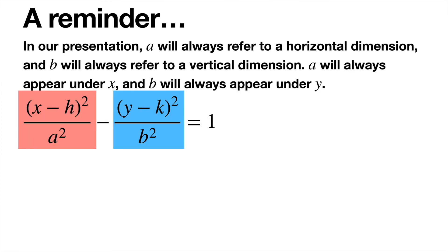Just as a reminder, before we get any further in our presentation, a will always refer to a horizontal dimension, and b will always refer to a vertical dimension. And a will always appear under x, and b will always appear under y. In some treatments, a will always be first in a hyperbola, and in some treatments, a will always be the bigger one. And what I'm saying is that, from my treatment, a is always going to be under x, and b is always going to be under y.